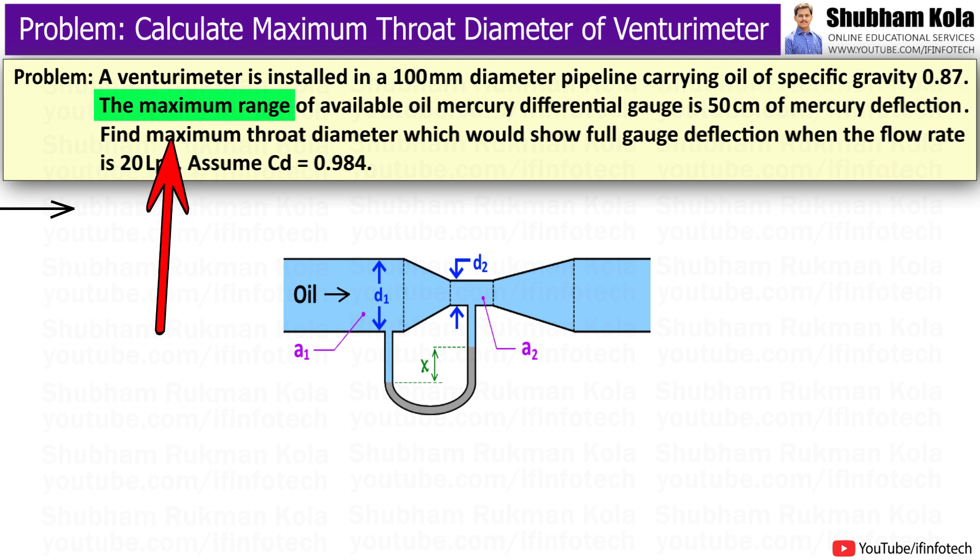The maximum range of available oil-mercury differential gauge is 50cm of mercury deflection. Find maximum throat diameter which should show full gauge deflection when the flow rate is 20 liters per second. Assume CD equal to 0.984.